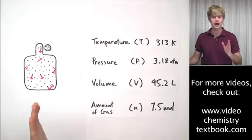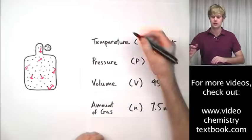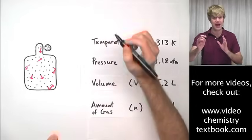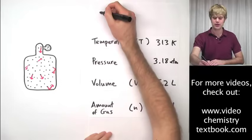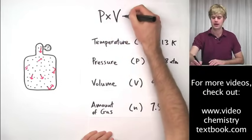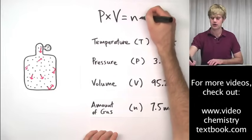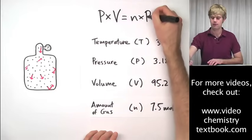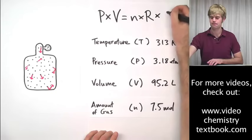And in order to do that, we use an equation that's a representation of the ideal gas law. And it's written as P times V, pressure times volume, equals n, the amount of gas, times R times T, temperature.